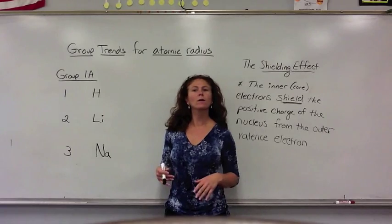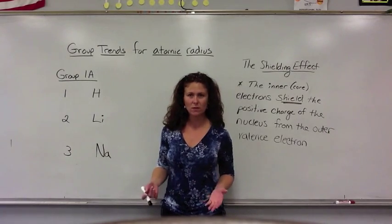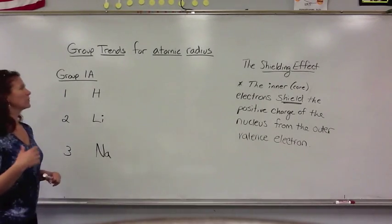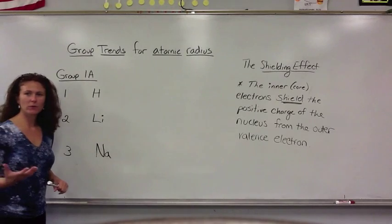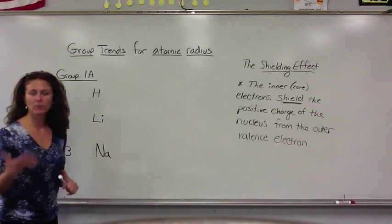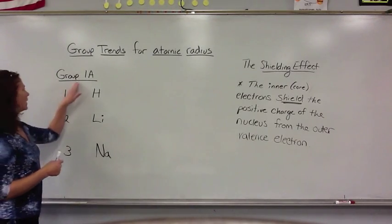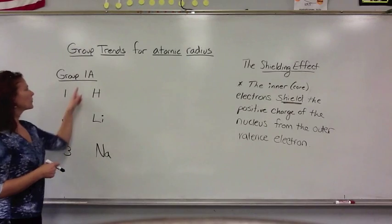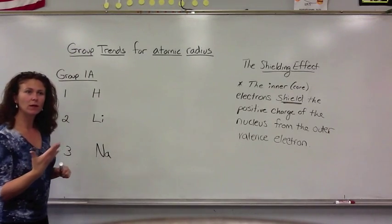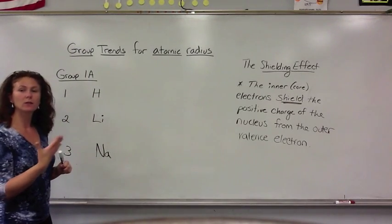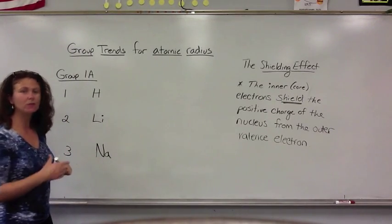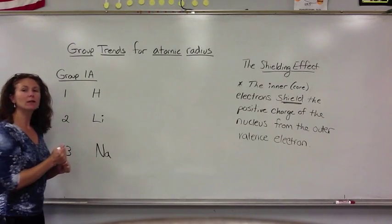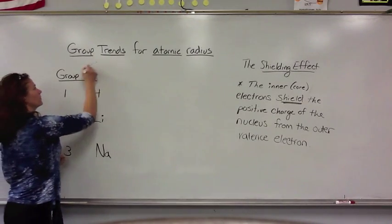Now we're going to talk about the group trends of atomic size. For instance, I'm going to take the first group on the periodic table, Group 1A. Because it's in Group 1A, they have common traits, and one of the common characteristics of Group 1A is that they all have one valence electron.